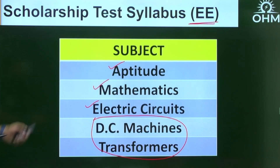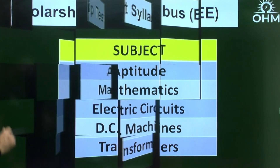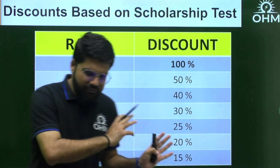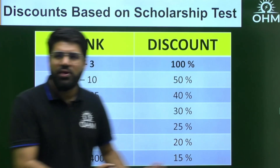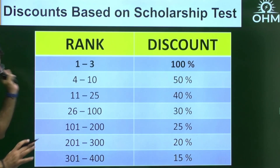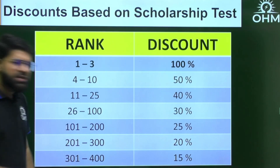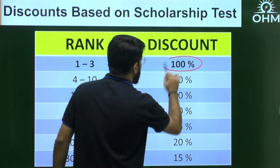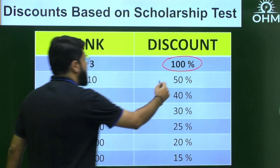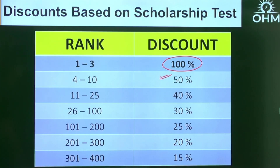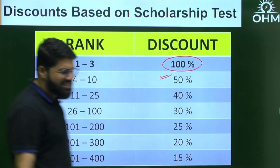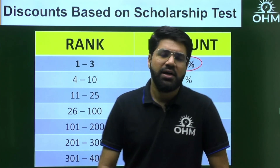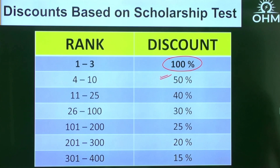That covers the syllabus for EE students. As a reminder, scholarships are available up to rank 400. Top 3 get 100%, ranks 4–10 get flat 50% scholarship. This is applicable for all online courses — both live courses and pre-recorded courses.